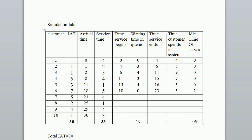For customer 7: arrival time is 23rd minute and the 6th customer's service ends at 23rd minute, so service begins at 23rd minute immediately. Waiting time in queue is 0. Service time is 4 minutes, so time service ends at 23 plus 4 equals 27th minute. Time customer spends in system is 0 plus 4 equals 4 minutes. Idle time of server is 0.